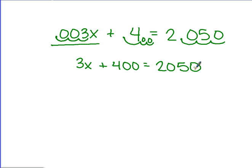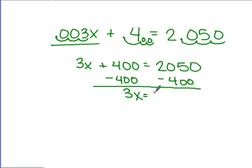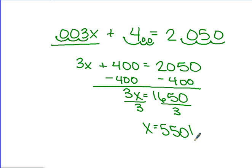Now I can solve without decimals, and my answers still remain the same. To solve this equation, we subtract 400 from both sides, then divide by 3, so x equals 550. In problems where we're dealing with decimal numbers, we want to move the decimal to the right — essentially multiplying by a power of ten in order to get rid of the decimal.